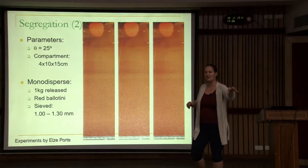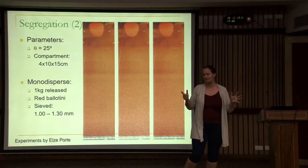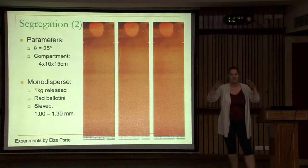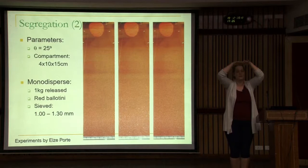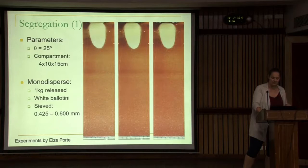Now we take half a kilogram of white particles and half a kilogram of red particles, mix them properly — which is not straightforward — and release them. You might think the result would be somewhere in between, but that's not the case. Due to segregation, the big particles rise and the small particles percolate down. When they get to the top of the flow they're faster, so they move to the side, forming levee formations. Because of the levees, the flow is channelized and goes much further.